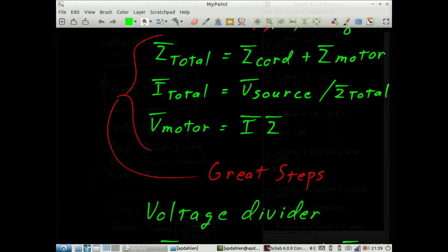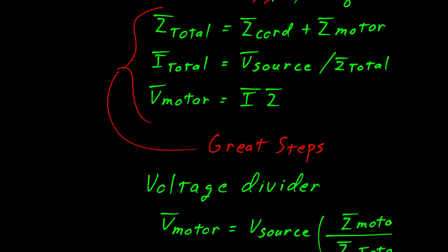We should go back to my paint and clean this up a little bit. So right here in the great steps where we have the voltage on the motor is equal to current times impedance, what we really should have said is it's equal to total current times the impedance of the motor.